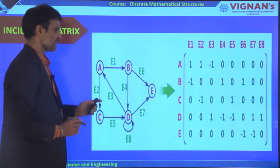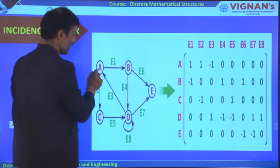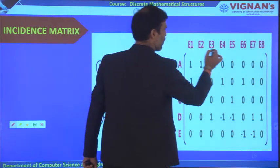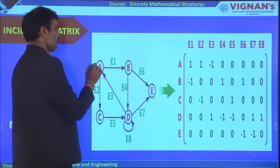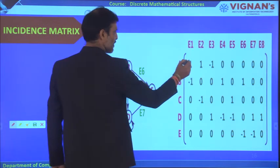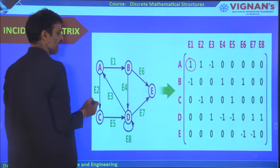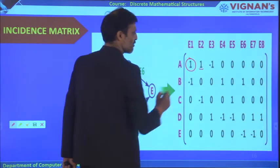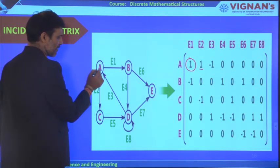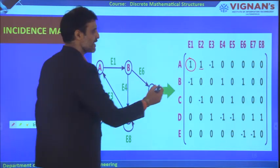Let us understand with an example. The given graph has 5 vertices and 8 edges, so we get a 5×8 matrix. For vertex A and edge E1 going from A to B: since E1 is going outward from A, A-E1 = 1. For edge E2 from A to C, going outward: A-E2 = 1. For edge E3 coming towards A from outside: A-E3 = -1.